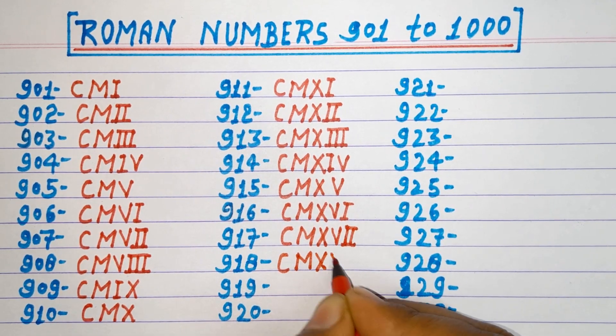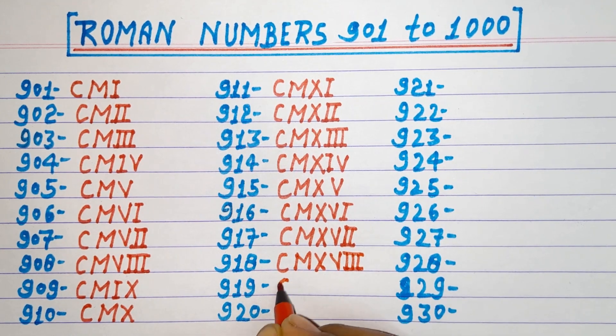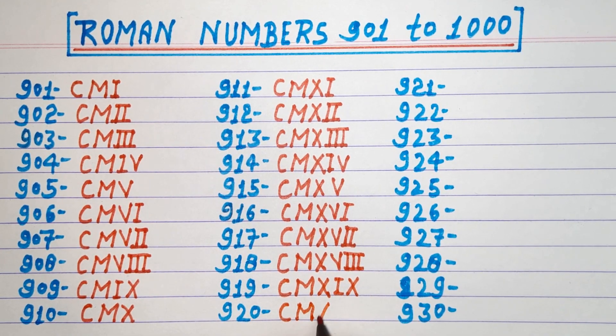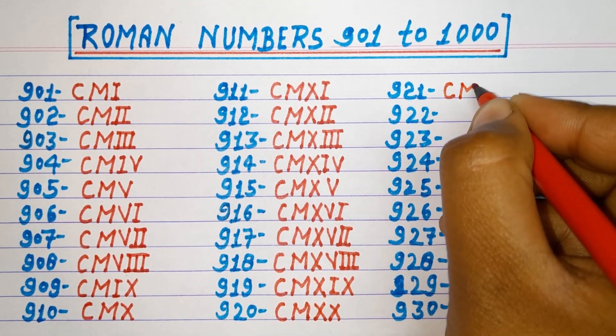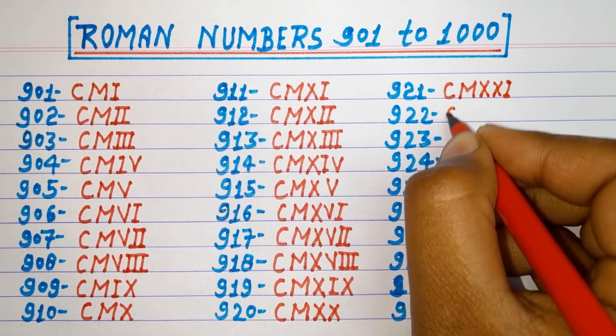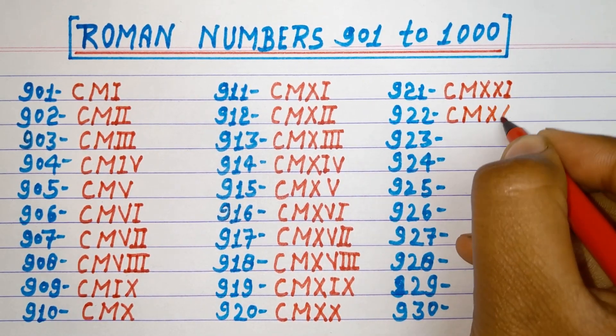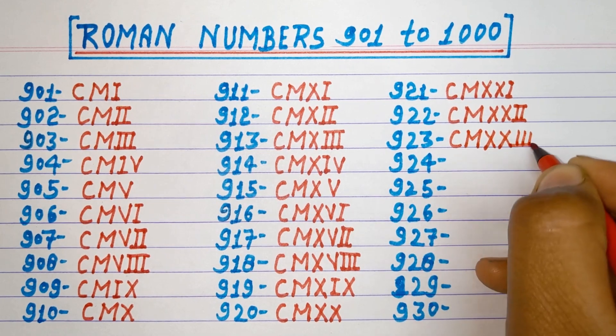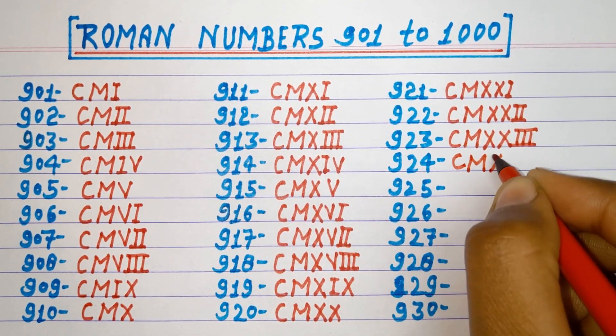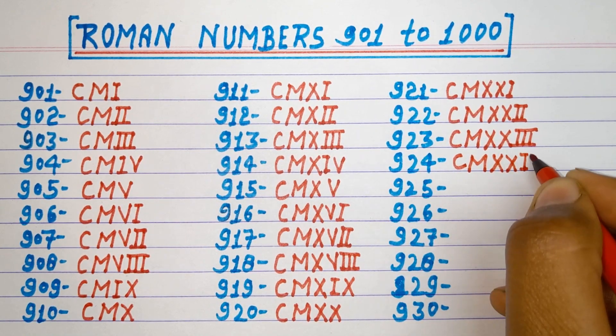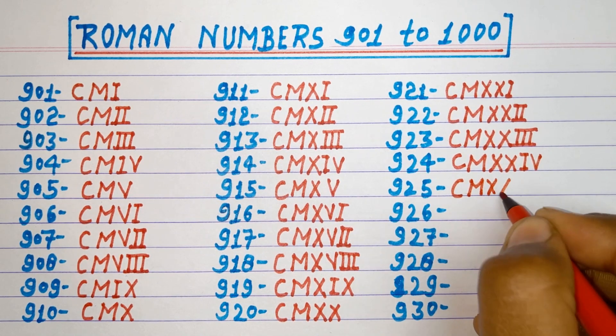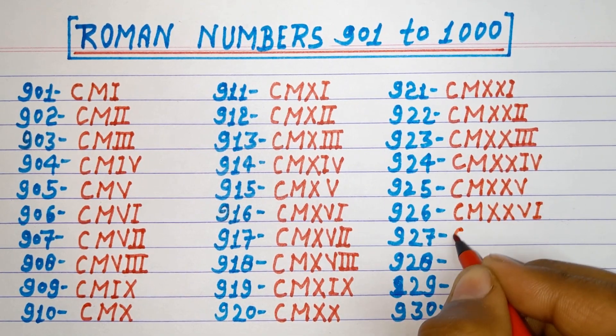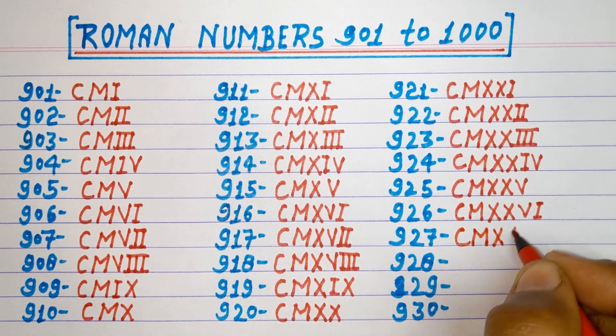918 CMXVIII, 919 CMXIX, 920 CMXX, 921 CMXXI, 922 CMXXII, 923 CMXXIII, 924 CMXXIV, 925 CMXXV, 926 CMXXVI, 927 CMXXVII.